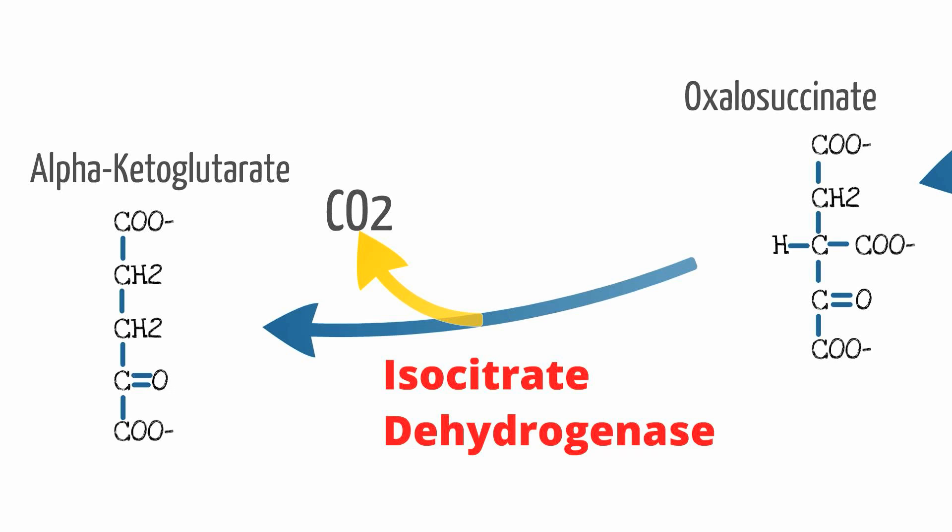Any intermediate that can turn into an amino acid can also be created from that respective amino acid. For example, if your body needs energy, it can utilize protein in rare circumstances. In this case, the amino acid glutamate can be broken down by glutamate dehydrogenase into alpha-ketoglutarate and enter the TCA cycle.